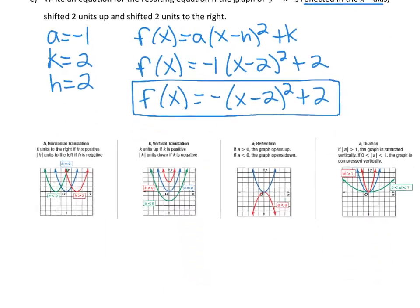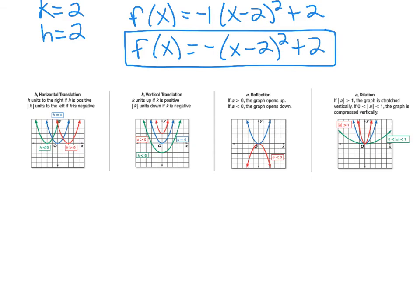On the bottom here, it talks about our transformations. A horizontal translation is when your h value changes. So if h is positive, it moves to the right. If h is negative, it moves to the left. Your vertical translation is your k. It moves up and down. It moves up if it's positive, down if it's negative. Your a value is a reflection. If a is greater than 0, the graph opens up. If it's less than 0, it opens down. And your dilation. So if the absolute value of a is greater than 1, it's stretched vertically, which means it gets wider. And if your absolute value of a is greater than 0 and less than 1, the graph is compressed vertically, which means it becomes narrower.